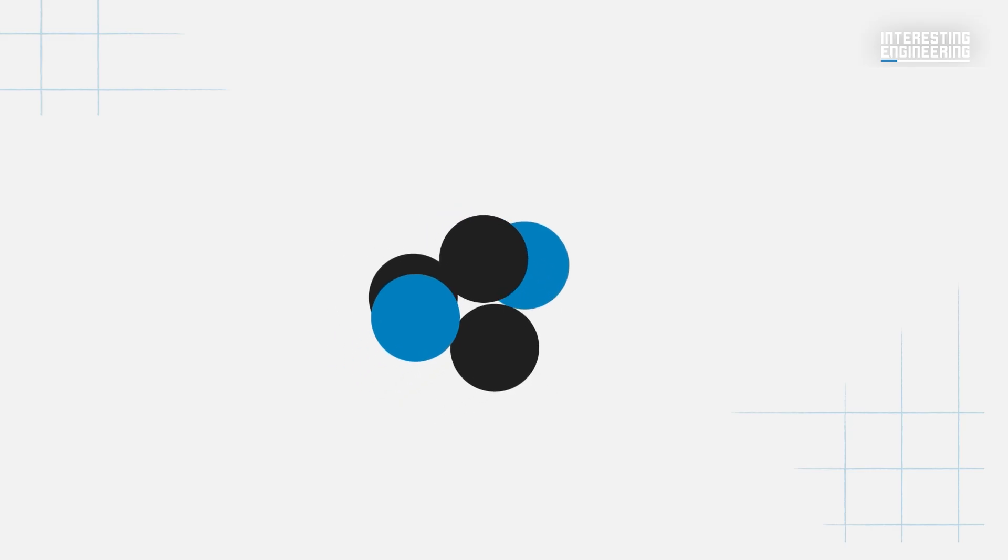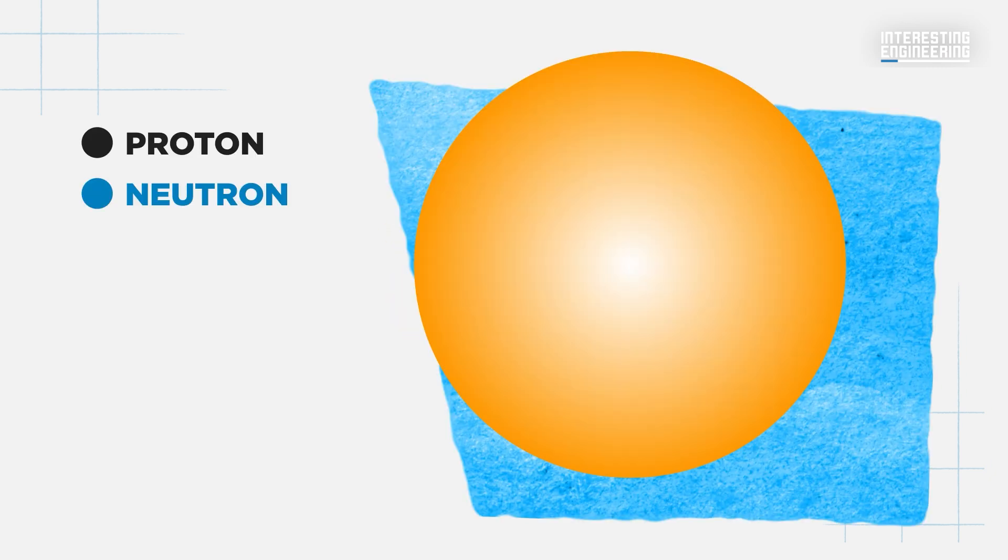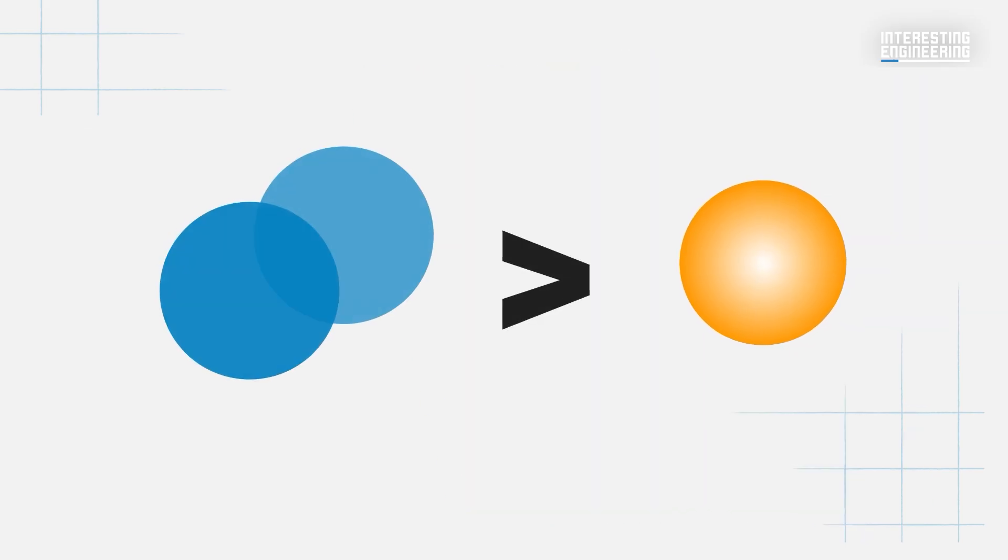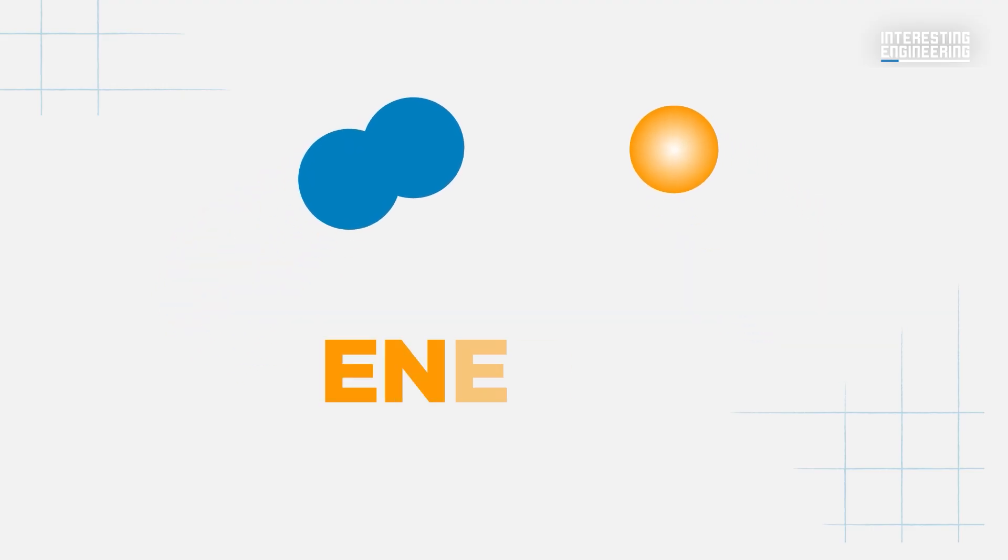However, when the nuclei of the atoms get close enough, the stronger nuclear force can act and fuse them, giving rise to a helium nucleus or an alpha particle, consisting of two protons and two neutrons. The mass of a helium nucleus is slightly less than the sum of the masses of the two hydrogen nuclei fused together. The difference in this mass is released as energy, which can be harnessed to generate electricity.